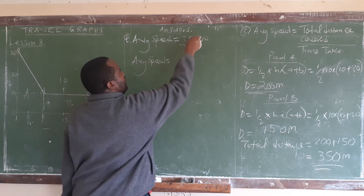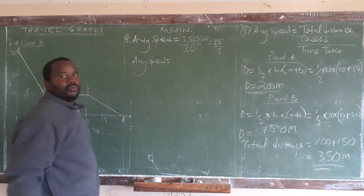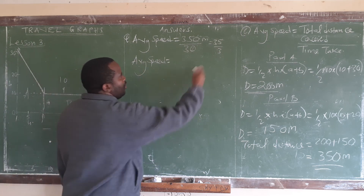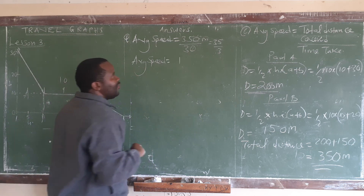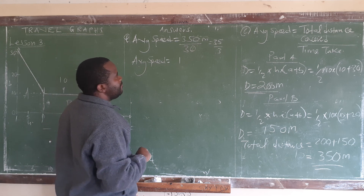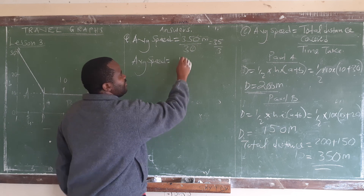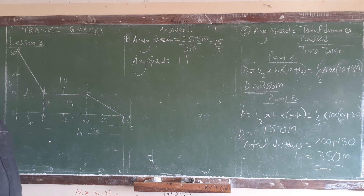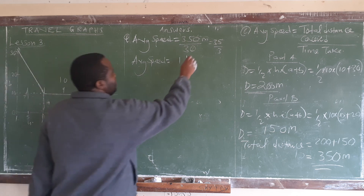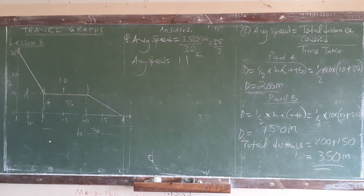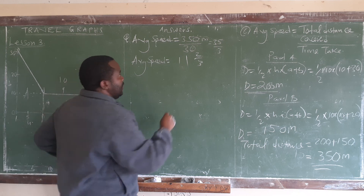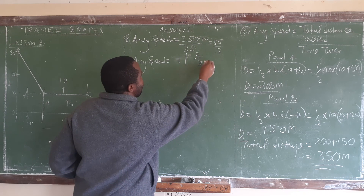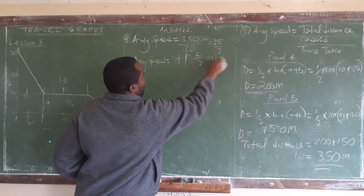We can simplify 350 divided by 30. Dividing, 3 into 3 gives 1, then into 5 gives us 11 remainder 2, so we get 11 and 2 over 3. Our average speed is 11 and 2/3 meters per second.